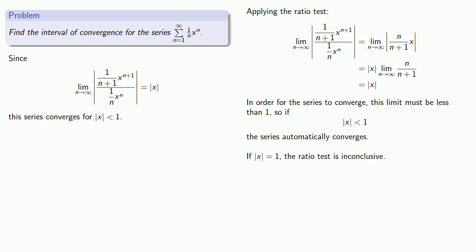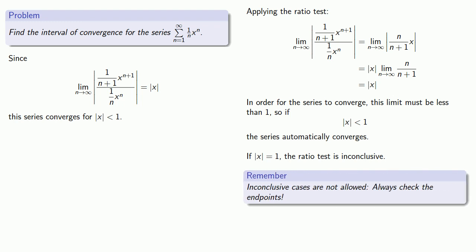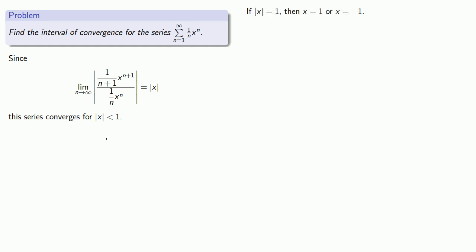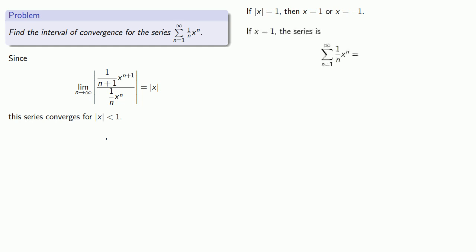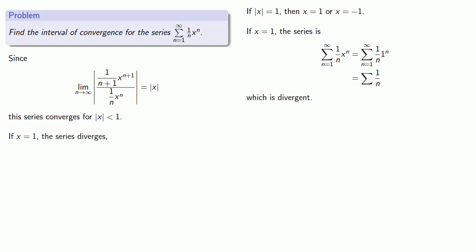Now we pay a price for our wishful thinking. On one hand we found where the series definitely converges, but on the other hand we have these inconclusive cases — and inconclusive cases are not allowed. We have to see what happens when the absolute value of x equals 1, meaning x is either 1 or negative 1. If x equals 1 the series becomes the harmonic series, which is divergent, so x equals 1 must be excluded from our interval of convergence.